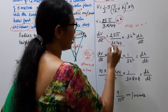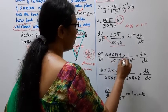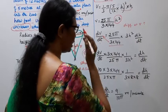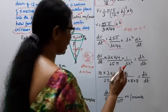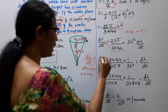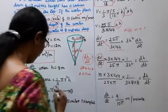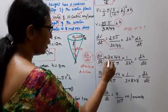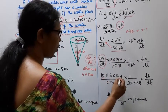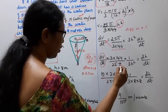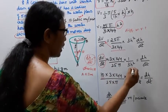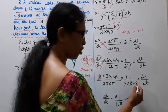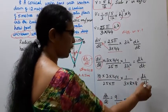Differentiating with respect to t: dv/dt = (25π / 144) · (1/3) · 3h² · dh/dt. We have dv/dt = 10, and substituting h = 8, so h² = 8 × 8 = 64, giving dv/dt = (25π/144) · h² · dh/dt.